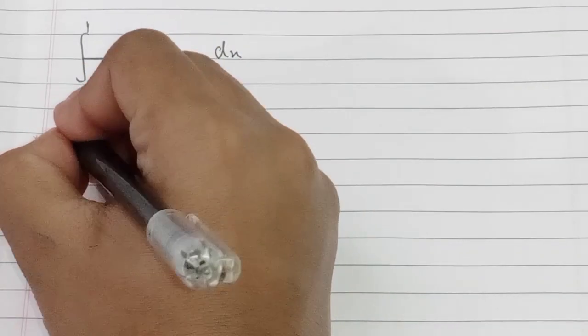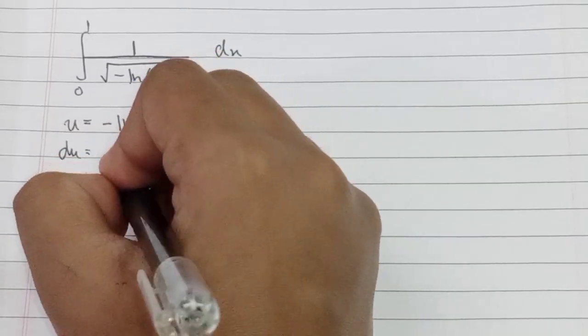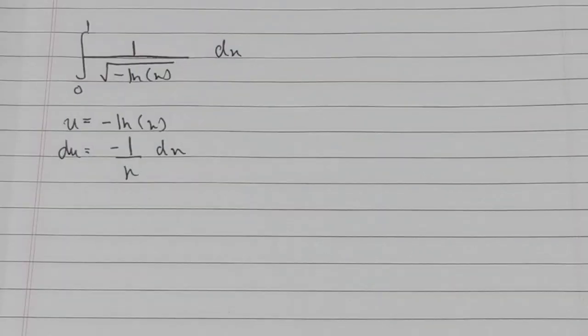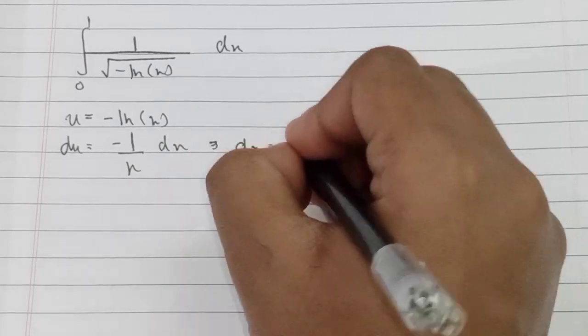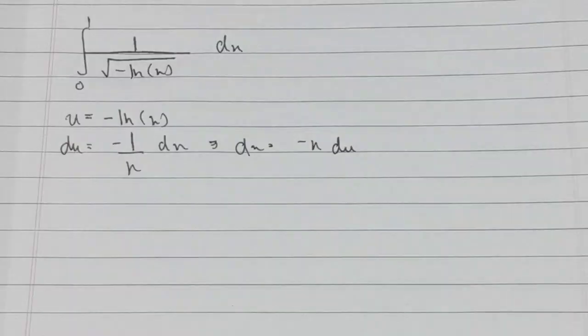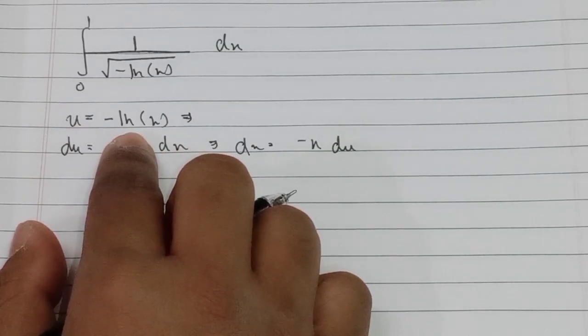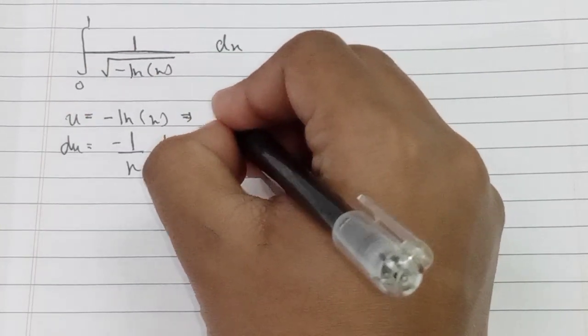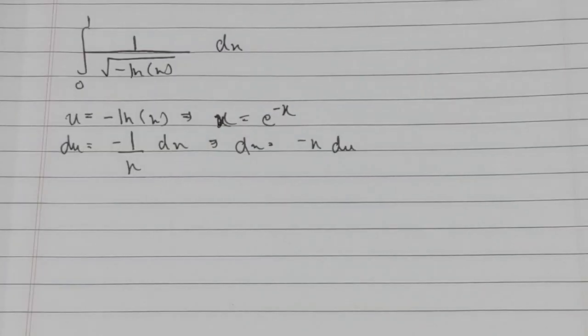Let's start solving by doing substitution. Let u equals negative ln of x. So du will be negative 1 upon x dx, which means dx equals negative x du. Since u = -ln(x), we can write x equals e to the negative u.